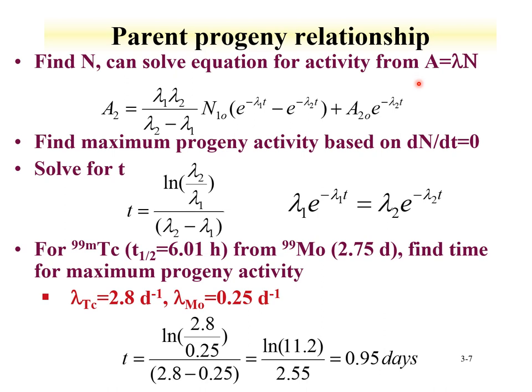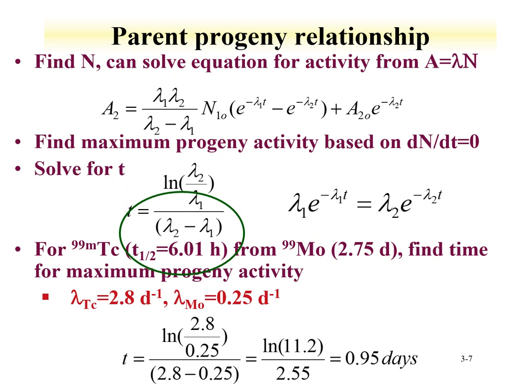Since we found n, the number of atoms, we can solve for the activity of the progeny at any time using activity equals lambda times n. Multiplying by lambda-2, we obtain the progeny activity equation. We can find maximum progeny activity by setting the change of progeny with respect to time equal to zero and solving for t. The time to reach maximum progeny is equal to the natural log of the ratio of the decay constants divided by the difference of the decay constants.